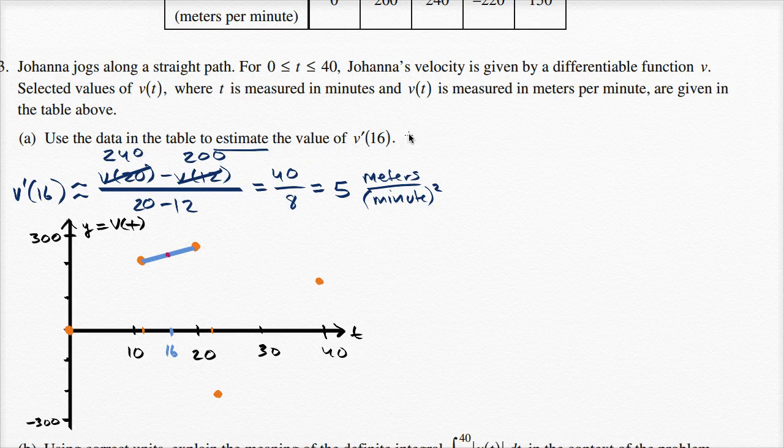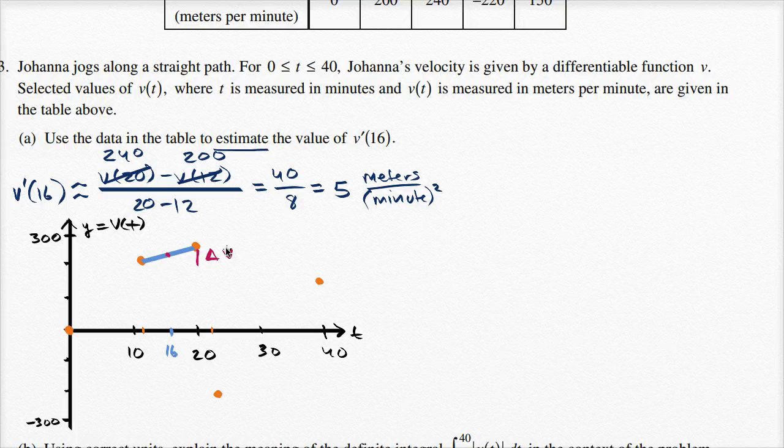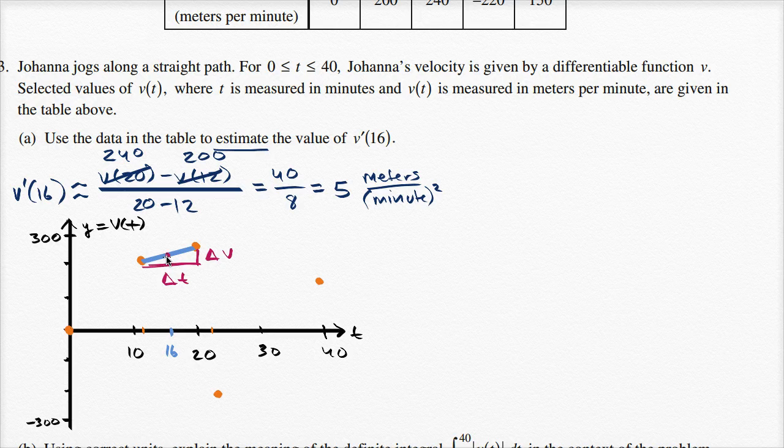So we literally just did change in v, which is that one, delta v, over change in t, over delta t, to get the slope of this line, which is our best approximation for the derivative, when t is equal to 16.